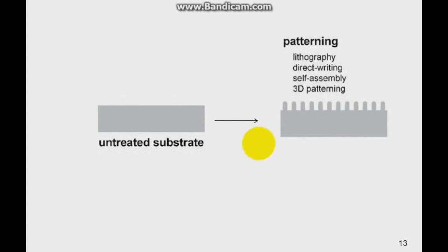If you take a look at the untreated substrate, you can see at the surface it is perfectly flat with no added material on top of it. Let's say you want to make the surface appear something like this. This is called patterning. You create a specific pattern on the surface of the material, and the way you can do this is through lithography, you have direct writing, self-assembly, and 3D patterning.